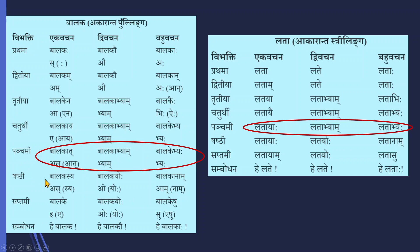Before the next question, we should know the Panchami Vibhakti. Panchami Vibhakti of the Balaka Shabda or Rama Shabda — Akaranta Pullinga — is: Ramat, Ramabhyam, Ramebhyaha. In Strilinga, Panchami Vibhakti of Lata Shabda or Rama Shabda: Ramayaha, Ramabhyam, Ramabhyaha; so Latayaha, Lataabhyam, Lataabhyaha. You should know all the Vibhaktis, but in the next question they will ask specifically about Panchami Vibhakti.